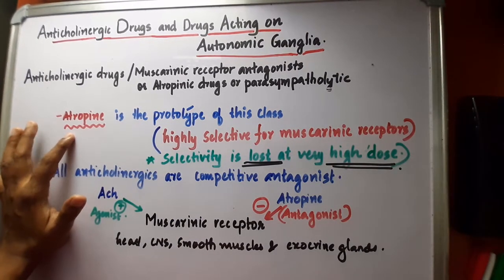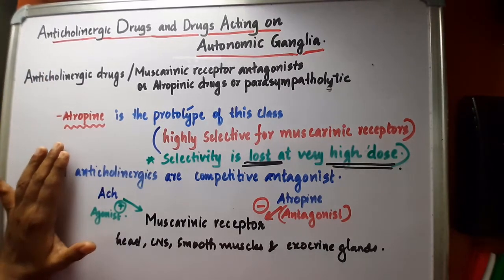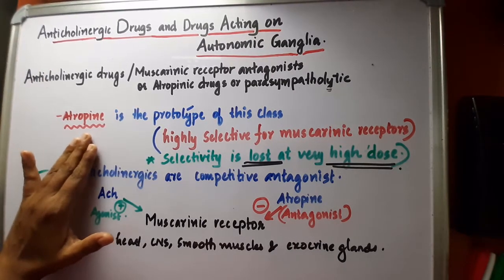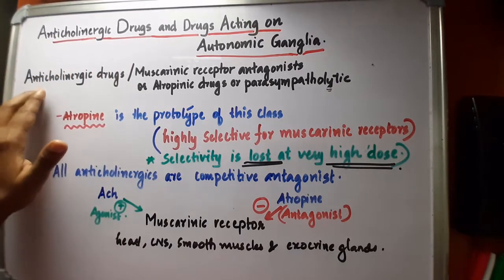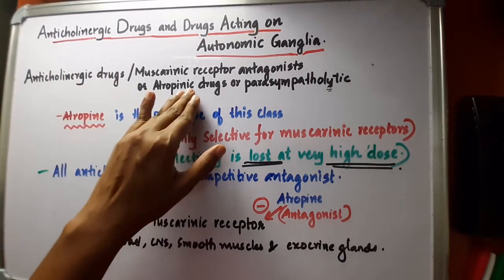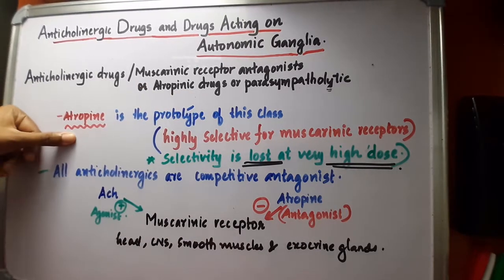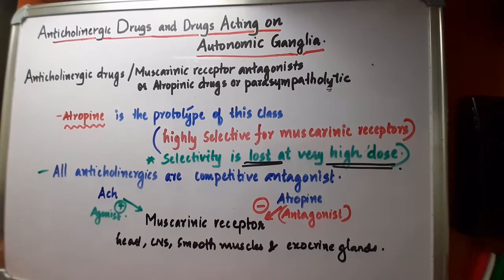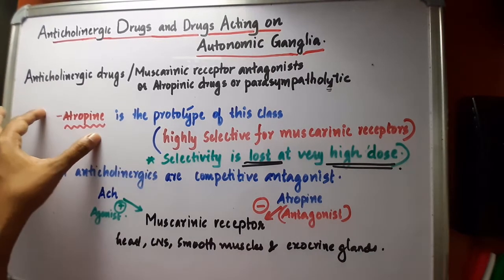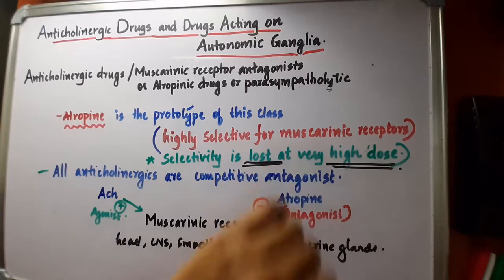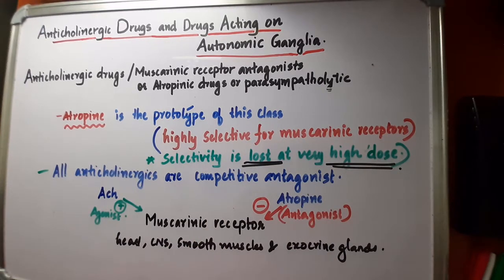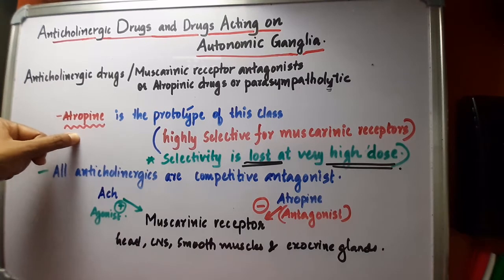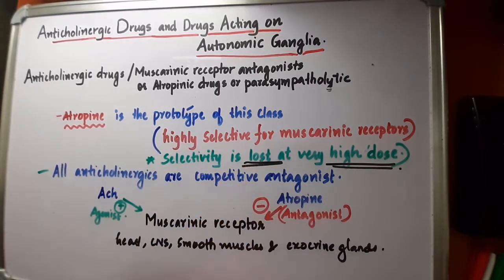Atropine is the prototype of anticholinergic drugs — we consider it the model for all anticholinergic drugs, which is why they are also termed atropinic drugs. Atropine is highly selective for muscarinic receptors, meaning when we give atropine, it binds to muscarinic receptors to produce its antagonist activity. However, this selectivity is lost at very high doses.